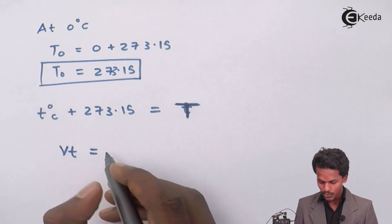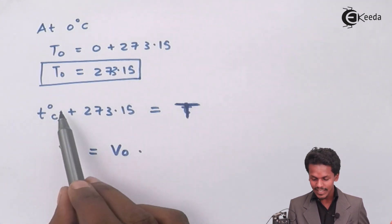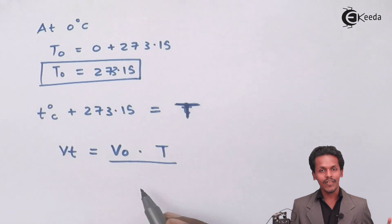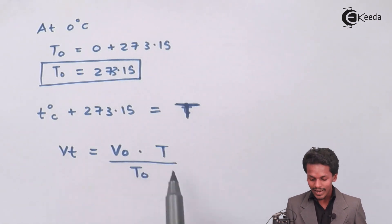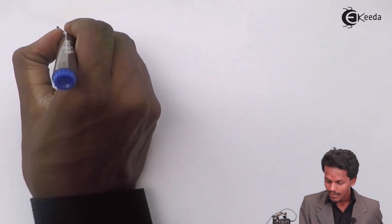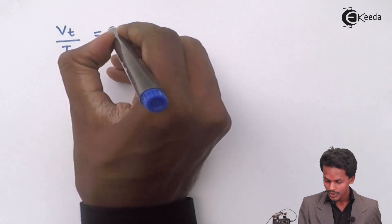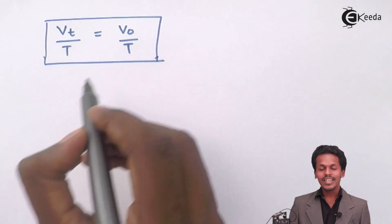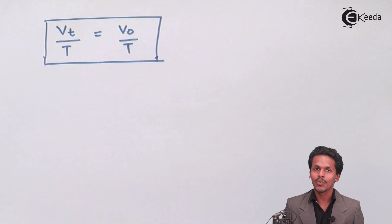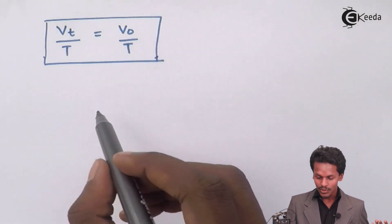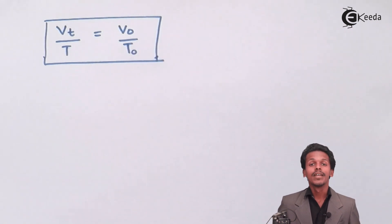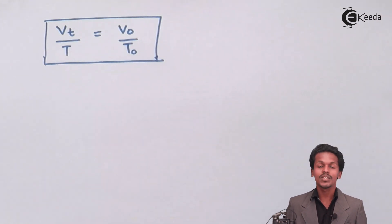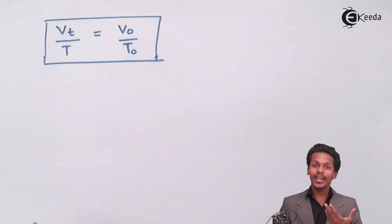So this gives us VT = V0 × T / T0, which can be rearranged as VT / T = V0 / T0. This clearly indicates that volume is directly proportional to temperature at constant pressure, which is exactly what Charles's Law states.